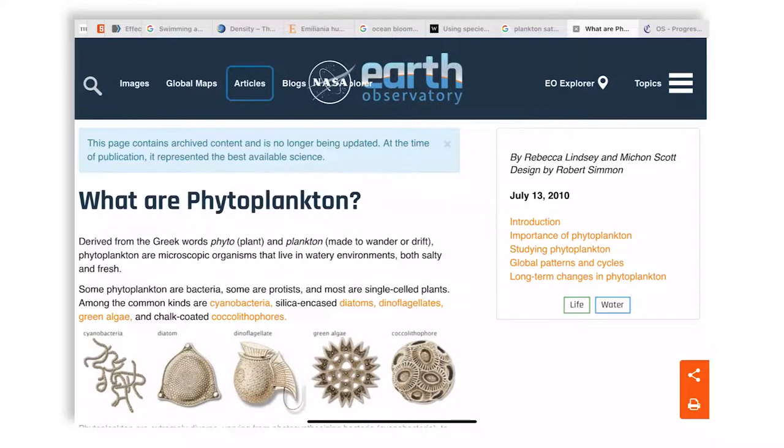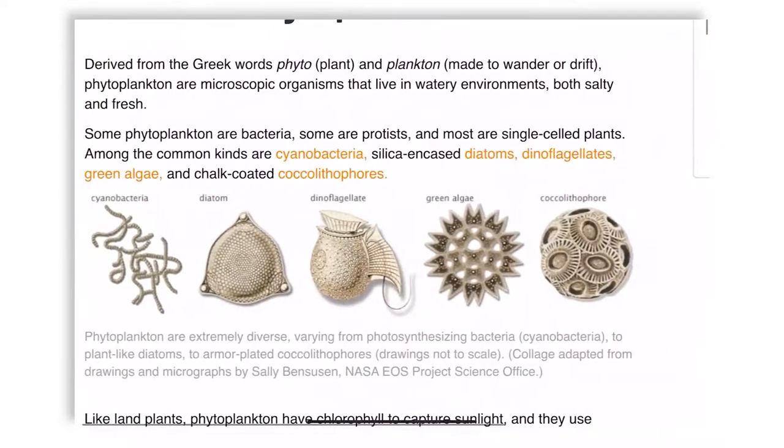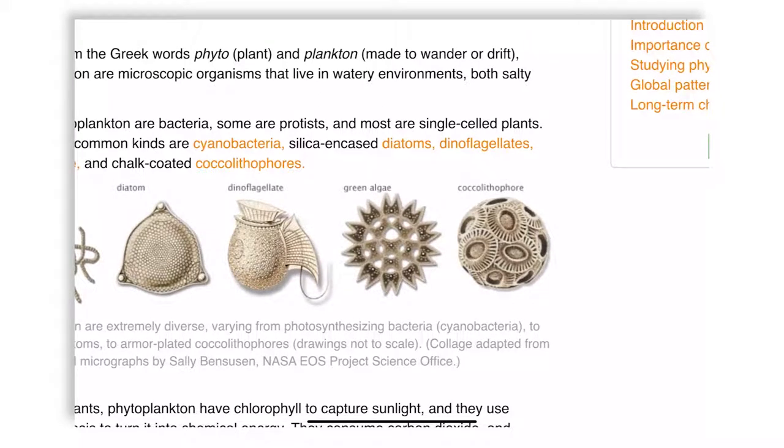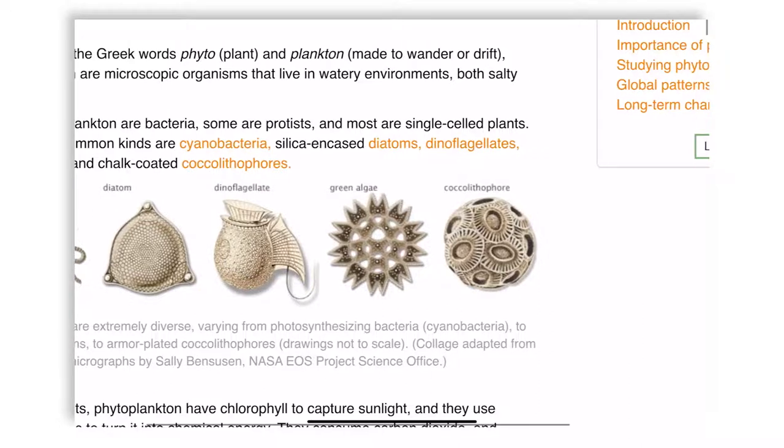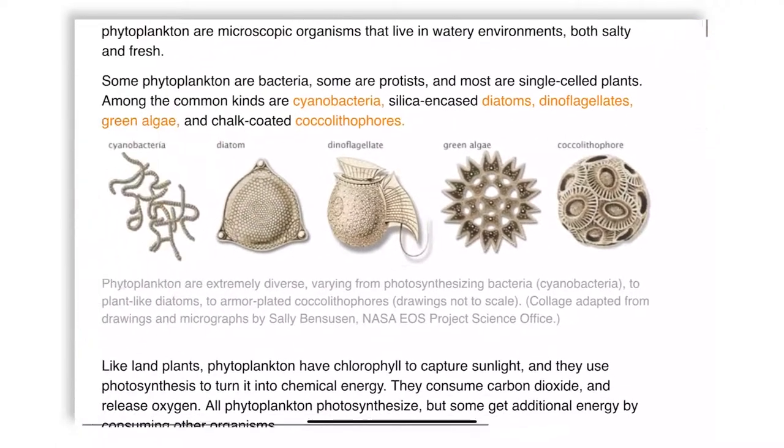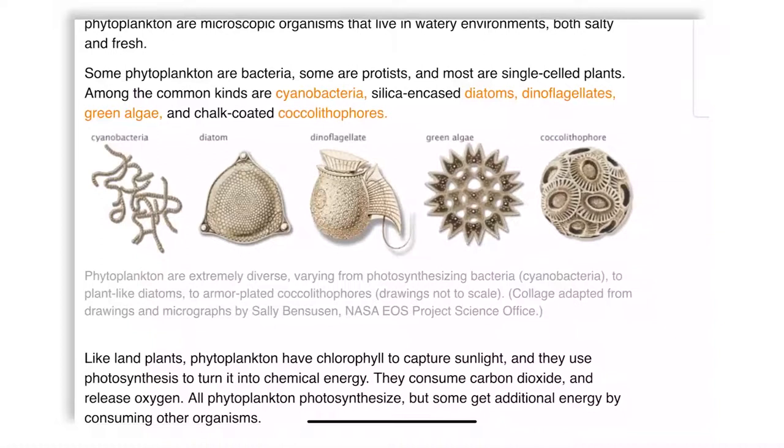And they come in very diverse forms. So from the left to right you are looking at cyanobacteria which sometimes are called blue-green algae, diatoms. Diatomaceous earth is something you may have heard of. If you look at the components of your toothpaste you will find diatoms in it. Yes, toothpaste. Colgate. Dinoflagellates, green algae and coccolithophores. Now the coccolithophores are calciferous deposited organisms, calcium deposited organisms. Whereas cyanobacteria are chlorophyll containing organisms. All of them are single cells, some of them do have some colonial forms.